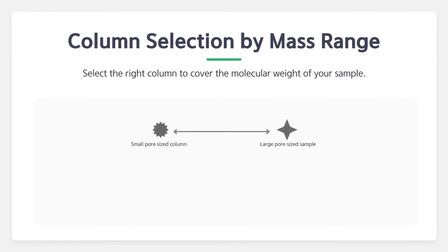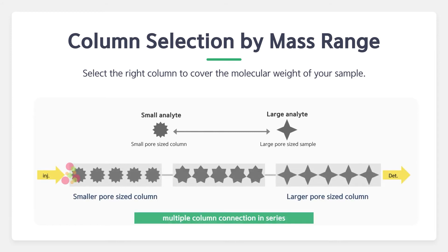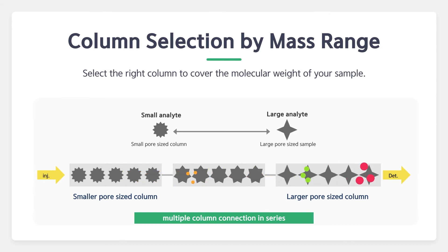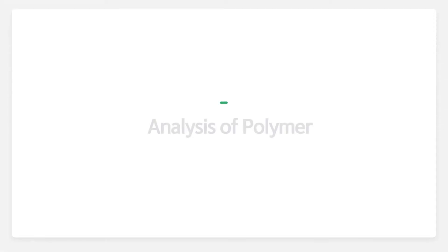Select the right column to cover the molecular weight of your sample. If your analyte is small, select a small pore-sized column, and if the analyte is large, select a large pore-sized column. If you have a wide range of molecular weights in your sample, multiple column connections can be utilized to determine the accurate molecular weight distribution and increase resolution.